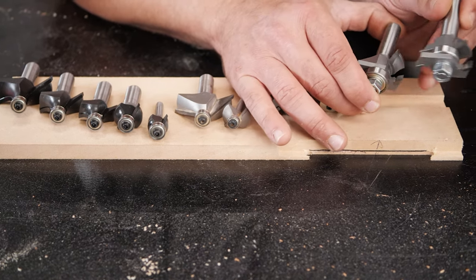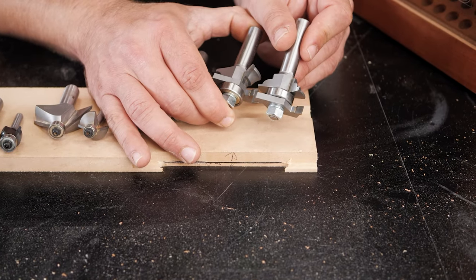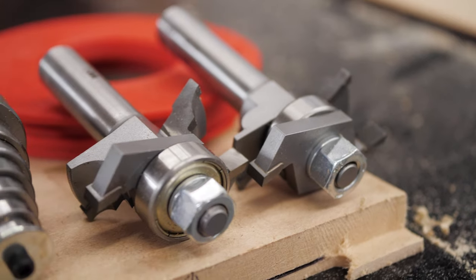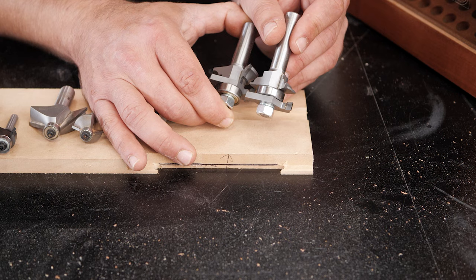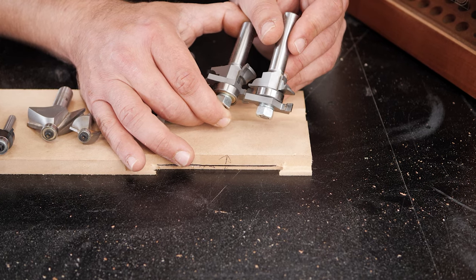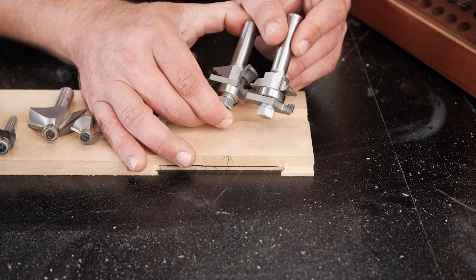And this is sort of a specialty bearing bit. This is called a rails and styles bit. This is for making raised panel doors in a cabinet. And you can see these bits perfectly match each other. It's the negative and positive of each other for creating the pieces of a door in a cabinet.